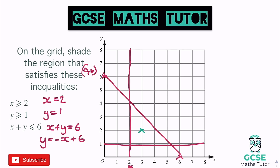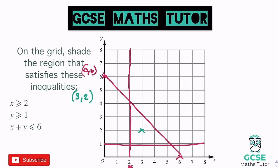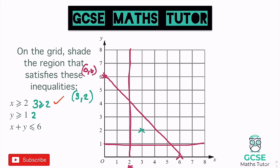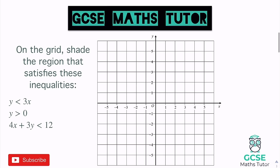Let's pick a coordinate in the middle region — (3, 2). x is 3, y is 2. Substituting: 3 is greater than or equal to 2 — correct. y is 2, and 2 is greater than or equal to 1 — correct. Then x plus y is less than or equal to 6: 3 plus 2 is 5, and 5 is less than or equal to 6 — correct. So we shade that region.